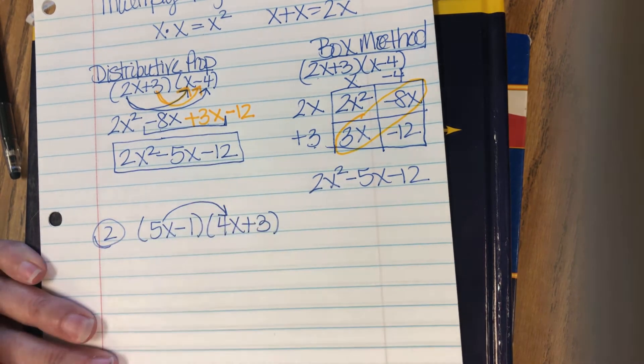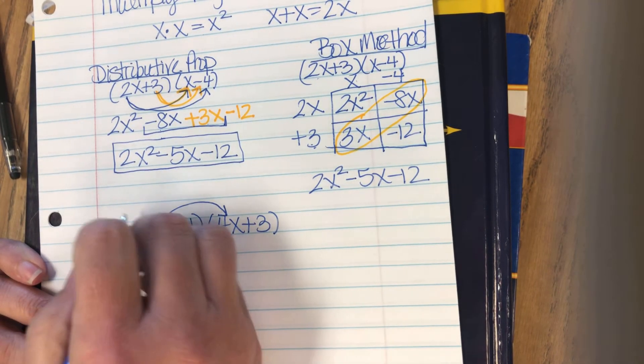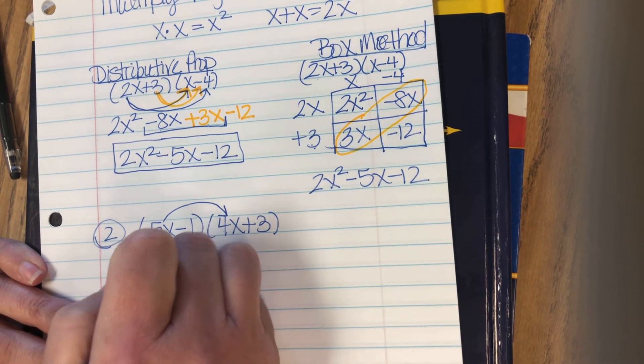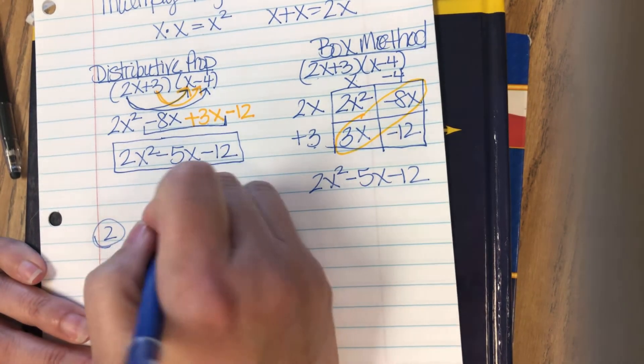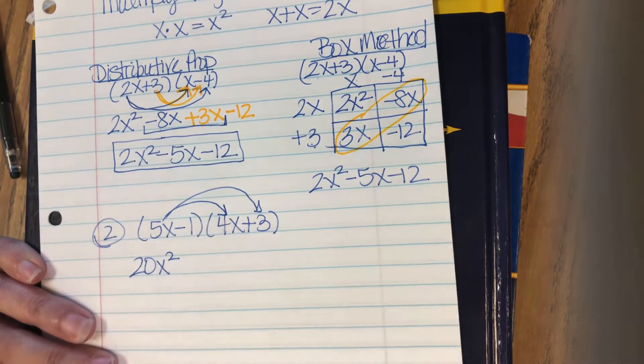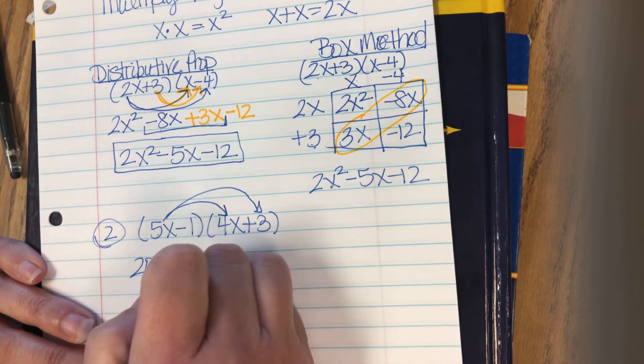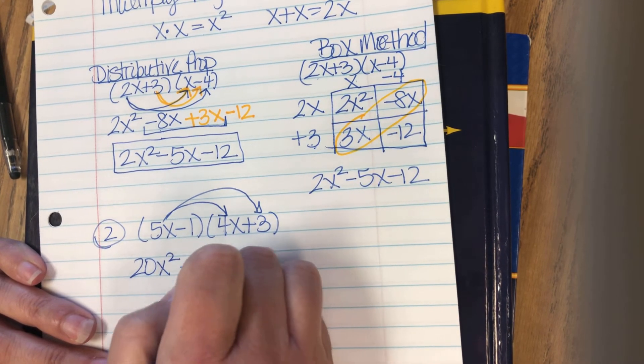So I do 5x times 4x. 5 times 4 is 20. x times x is x squared. 5x times 3. 5 times 3 is 15. So 15x.